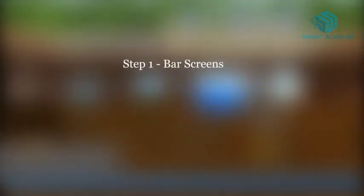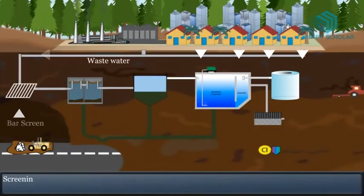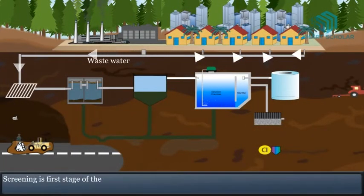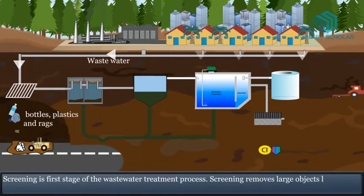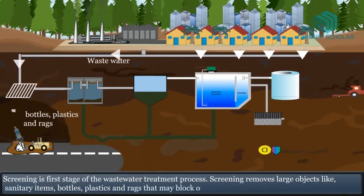Step 1: Bar screens. Screening is the first stage of the wastewater treatment process. Screening removes large objects like sanitary items, bottles, plastics and rags that may block or damage treatment plant pumps.